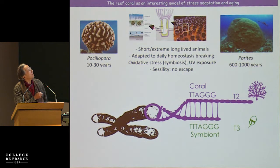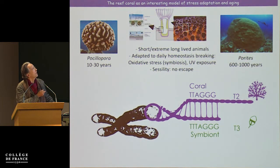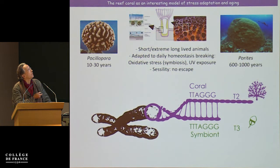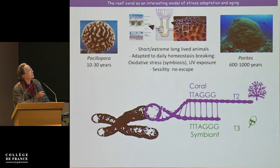An important aspect of coral biology — at least for reef corals — is that their endothelial cells live in symbiosis with an alga, so it's a kind of mix between animal and plant. This provides most of the carbon source through photosynthesis. Because of this symbiosis and living in the sea, corals face daily huge homeostatic challenges in terms of oxidative stress, UVA exposure, and symbiosis management — meaning they have been adapted to that.